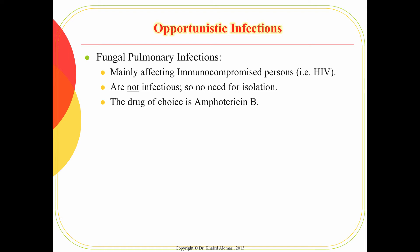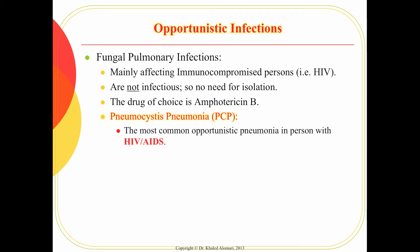This fungal infection rarely causes pneumonia in healthy people — you most likely see it in immunocompromised patients, and the most common group is patients with HIV. It's not infectious, so no isolation is required. The drug of choice is amphotericin B, which is an antifungal and continues to be the best drug for this infection. PCP is the most classic example of opportunistic pneumonia caused by a fungus among patients with HIV or AIDS — it used to be called Pneumocystis carinii before.